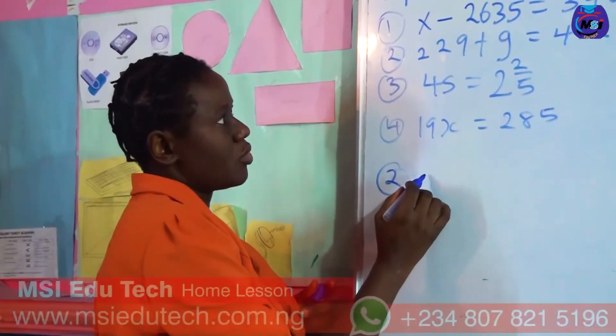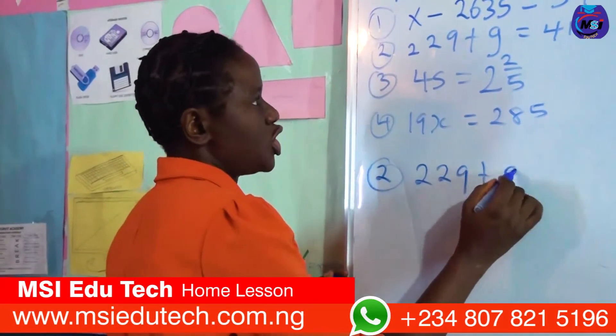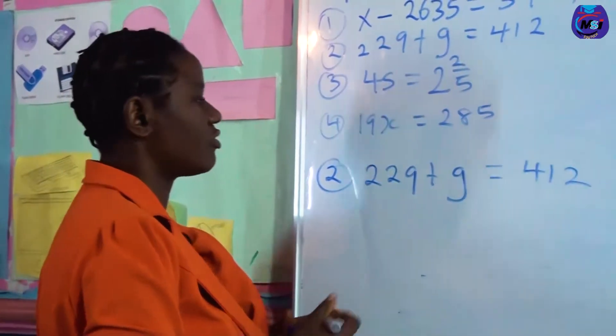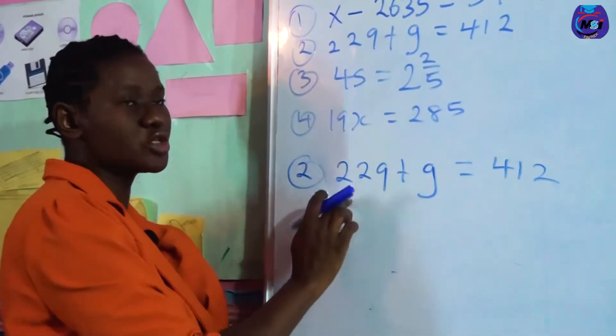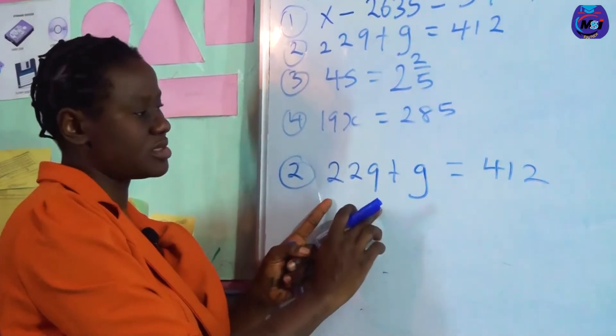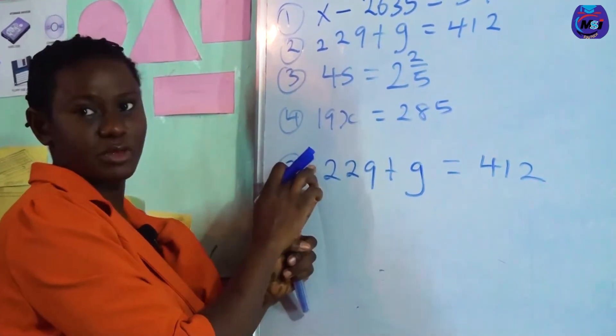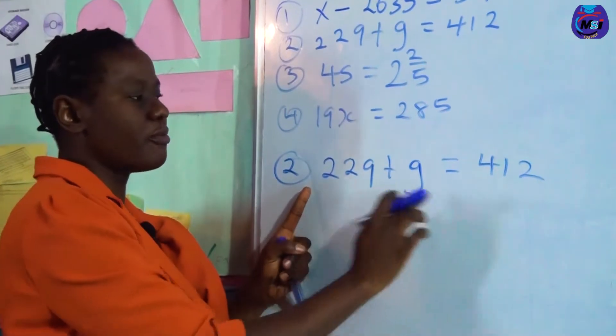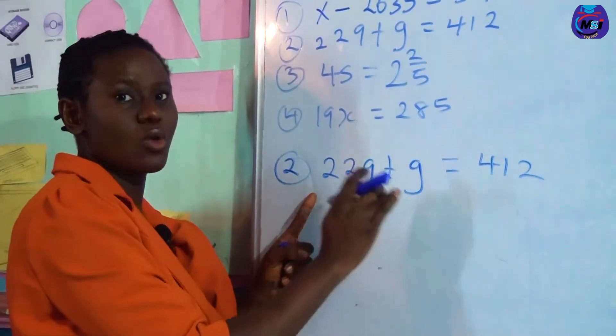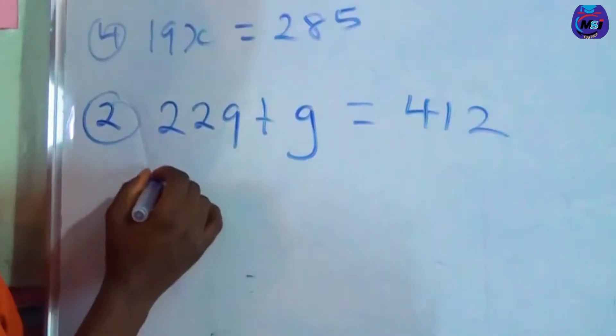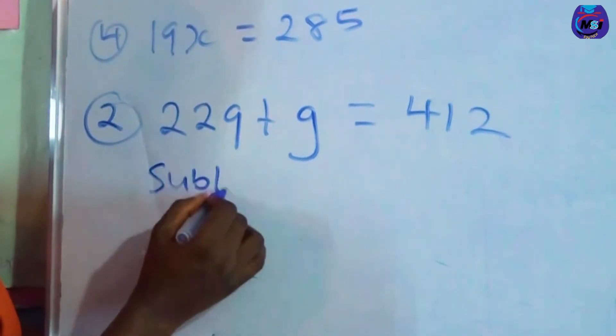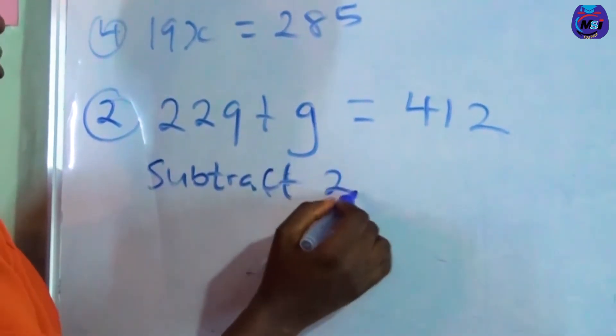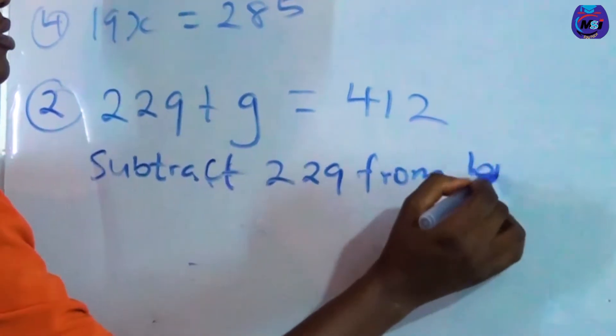In the second question we have 229 plus g equals 412. We are looking for g, so we need to look for a way to take off 229. 229 is carrying an invisible plus sign, an addition sign, so we need to take away 229 from both sides to allow g, which we are looking for, to stand alone. So subtract 229 from both sides.